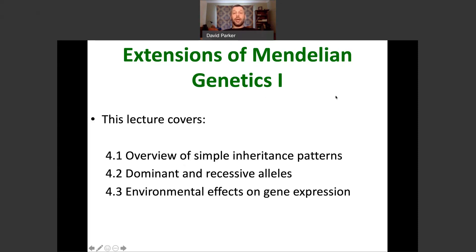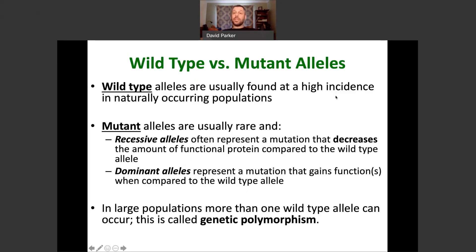To begin with, let's talk about wild type and mutant alleles. Wild type alleles is the catch-all term for alleles that are found at a high incidence in naturally occurring populations. Normally, wild type alleles don't confer any particular advantage or disadvantage on an individual — people that have wild type alleles are considered relatively normal.